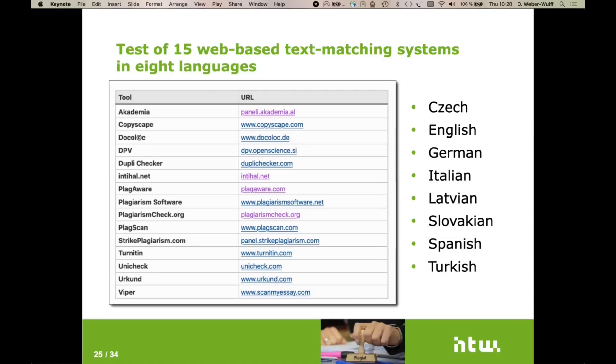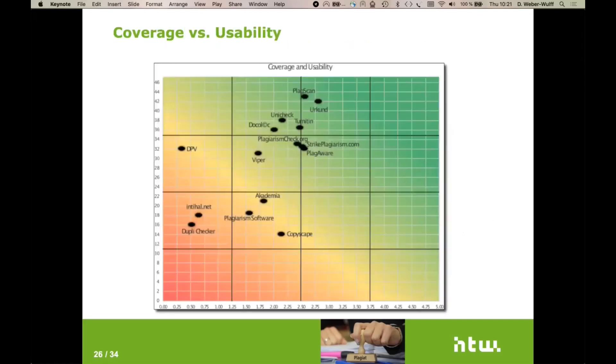And we took these languages that the researchers were able to at least read: Czech, English, German, Italian, Latvian, Slovakian, Spanish and Turkish. It was important that we had at least two people in the research project that were able to understand the results in these various languages, because we didn't want to base our work just on one person saying what they did. I'm going to skip over a lot of what we actually did, because it's all described in the paper in excruciating detail. But we looked at two aspects. We looked at coverage.